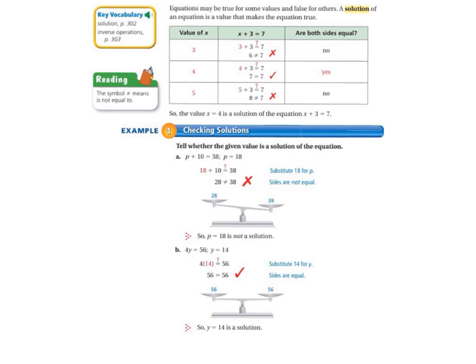Today we'll be starting on page 302 of your math textbook. Equations may be true for some values and false for others. A solution of an equation is a value that makes the equation true. The table below shows a value of x and an equation x plus 3 equals 7, and the equation is true if both sides are equal.